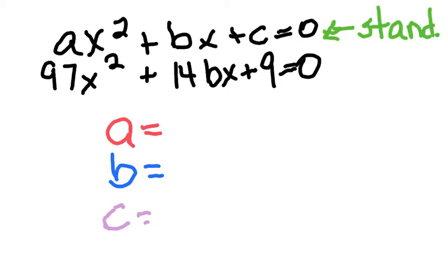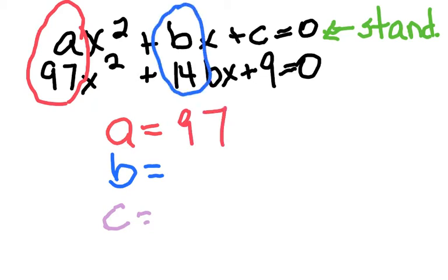So really quick, circle the A and the 97, circle the B and the 14, and circle the C. If you did not get that, send me a message on Google Hangouts, and I'll explain it to you.